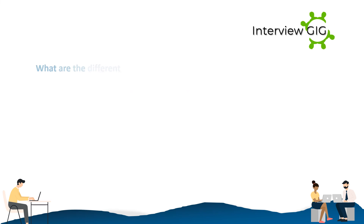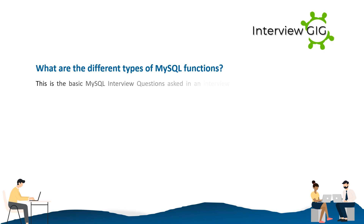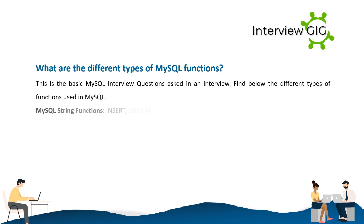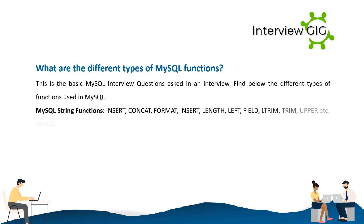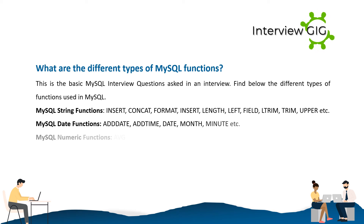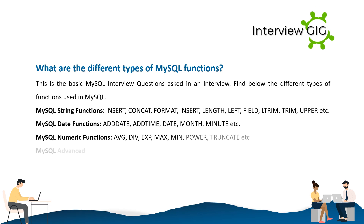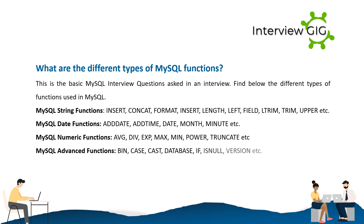What are the different types of MySQL functions? MySQL string functions: INSERT, CONCAT, FORMAT, LENGTH, LEFT, FIELD, TRIM, UPPER, etc. MySQL date functions: ADDDATE, ADDTIME, DATE, MONTH, MINUTE, etc. MySQL numeric functions: AVG, DIV, EXP, MAX, MIN, POWER, TRUNCATE, etc. MySQL advanced functions: BIN, CASE, CAST, DATABASE, IF, ISNULL, VERSION, etc.